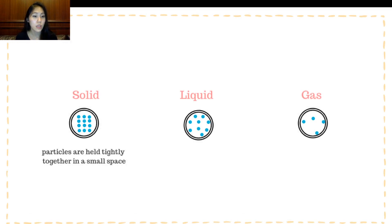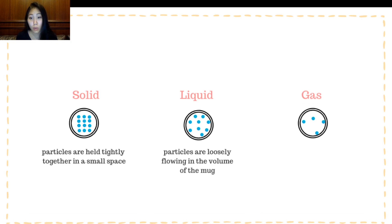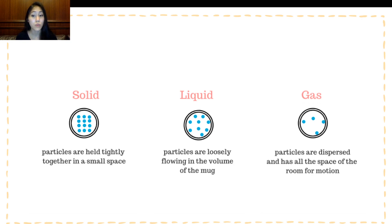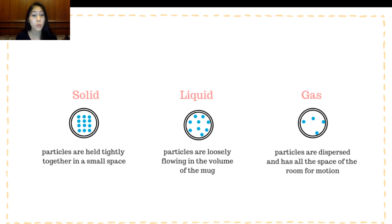In a solid state, particles are held tightly together in a small space. Compared to that, in a liquid form, the particles are loosely flowing the volume of the mug. And when we're looking at the gas, particles are dispersed and have the space of the room for whatever motion. Solid, liquid, and gas — looking at density, just by looking at the microscopic view and what we've learned so far, evidently the most densely packed particles would be found in solid state, followed by liquid and gas.